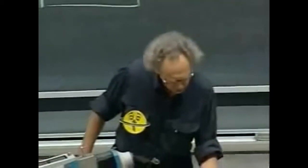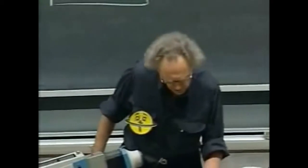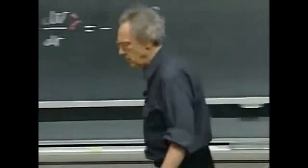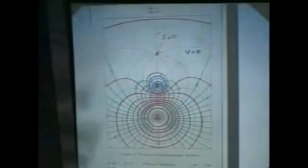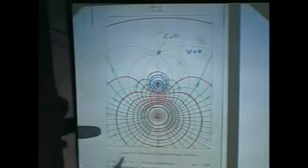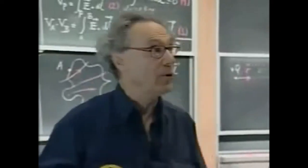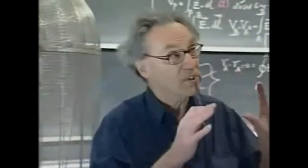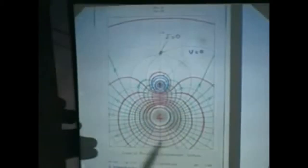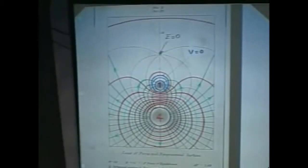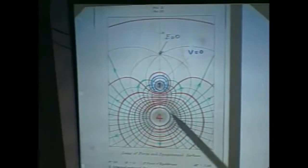I will show you again the overhead projection of the nice drawing by Maxwell — the plus-four charge and the minus-one charge, the same one we saw last time. The vertical lines must always be at a 90-degree angle; I discussed this in great detail last lecture so I will not repeat that. The red lines are really surfaces — this is three-dimensional; you have to rotate the whole thing about the vertical axis. The red ones are positive potential surfaces, the blue ones are negative potential surfaces, and the green lines are field lines.